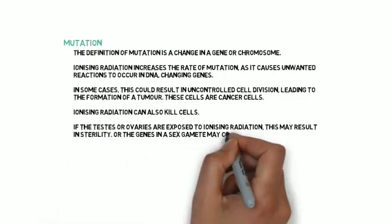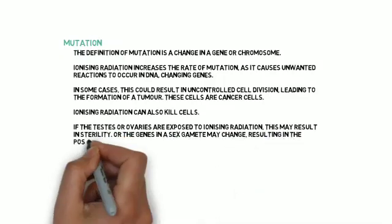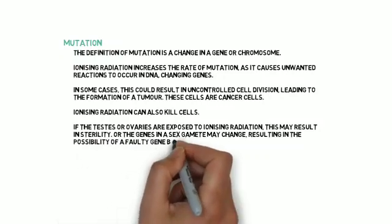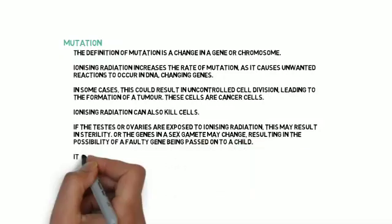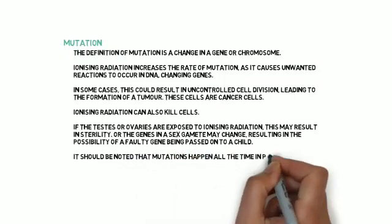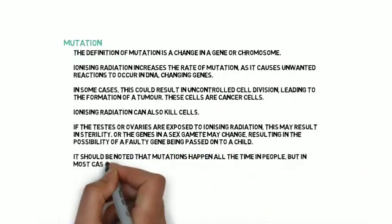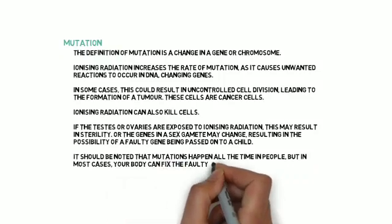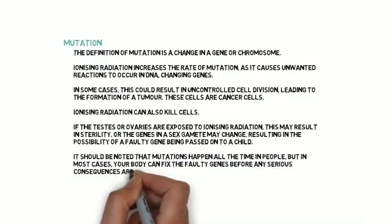If the testes or ovaries are exposed to ionizing radiation, this may result in sterility. Or, the genes in a sex gamete may change, resulting in the possibility of a faulty gene being passed on to a child. It should be noted that mutations happen all the time in people, but in most cases, your body can fix the faulty genes before any serious consequences arise.